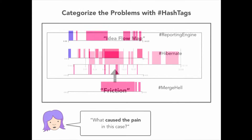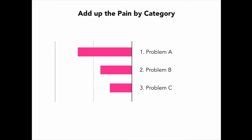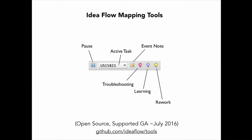We're categorizing all the problems we run into with hashtags — nothing fancy. We talk about what caused the pain in this case. Basically anything over 20 minutes we talk about. Then we start adding up the pain by category to figure out what's the biggest problem we need to solve. The way we're collecting this data is with tools that integrate with your IDE. They're partially automated, partially manual, and we're working on rewriting the version we've been using the last two years. Right now it's an IntelliJ plugin, so I'm going to show you that version.